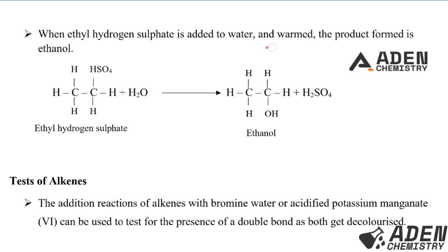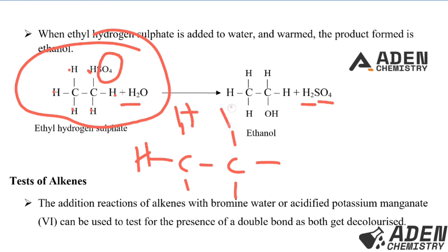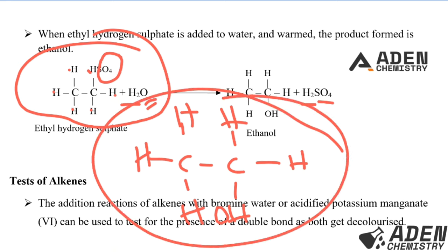When ethyl hydrogen sulfate is added to water and warmed, the product is ethanol. Ethyl hydrogen sulfate plus water gives ethanol plus sulfuric acid (H2SO4). From the reactant we have two hydrogen atoms in the sulfuric acid and the sulfate group, which are removed to give sulfuric acid as a byproduct. What remains are two carbons; with six hydrogen atoms and an OH group, forming ethanol — which has the OH functional group characteristic of alkanols.